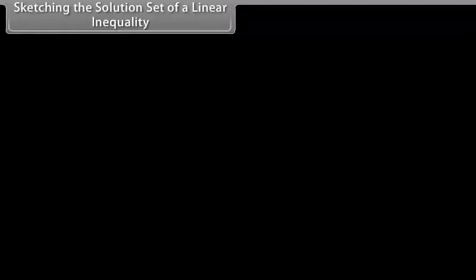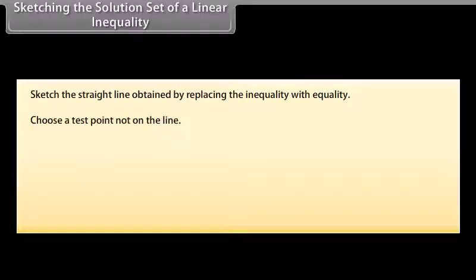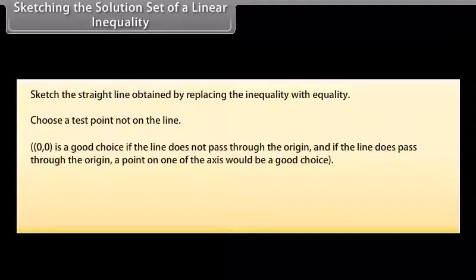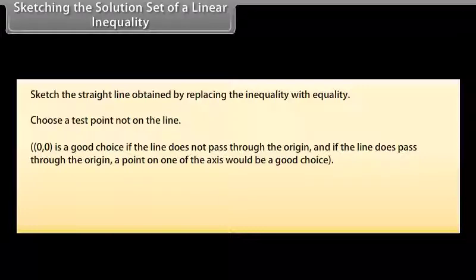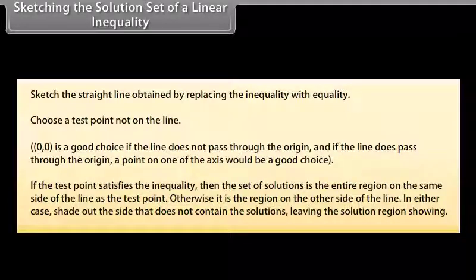Sketching the solution set of a linear inequality. Sketch the straight line obtained by replacing the inequality with equality. Choose a test point not on the line — (0, 0) is a good choice if the line does not pass through the origin; if the line passes through the origin, a point on one of the axes would be a good choice. If the test point satisfies the inequality, then the solution set is the entire region on the same side of the line as the test point; otherwise it is the region on the other side. Shade out the side that does not contain the solutions, leaving the solution region showing.